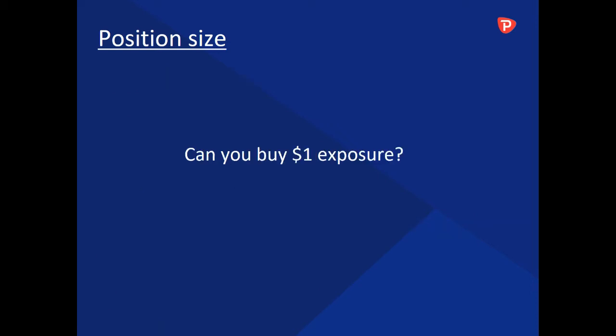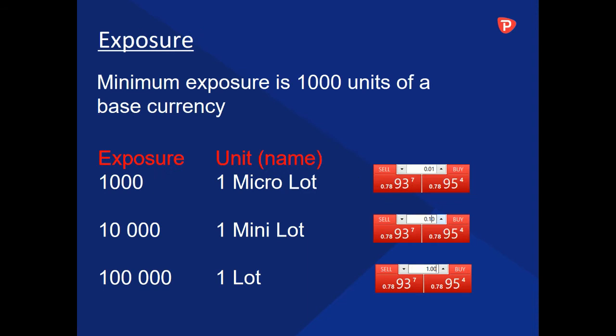Can you really buy 1 dollar of exposure in a market? Probably not. The minimum exposure is 1,000 units of a base currency, so exposure starts at 1,000 units, which is called a micro lot. This is just the name. This is how it looks on a platform: 0.01.